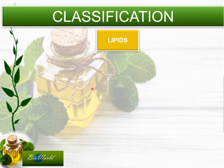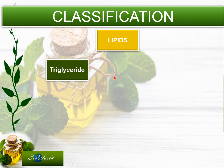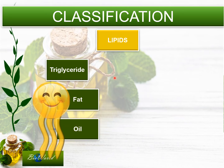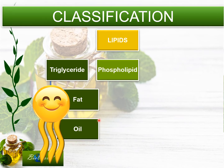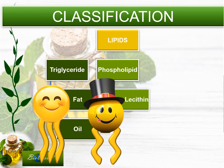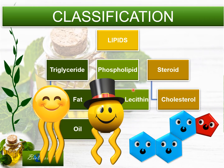Let's classify lipids. The first class is triglyceride, made up of fat and oil. Usually we represent the diagram for triglyceride with three tails. The second class is phospholipid, where we will study lecithin, a molecule with two tails. The third class is steroid, and we will study cholesterol as an example of steroid.